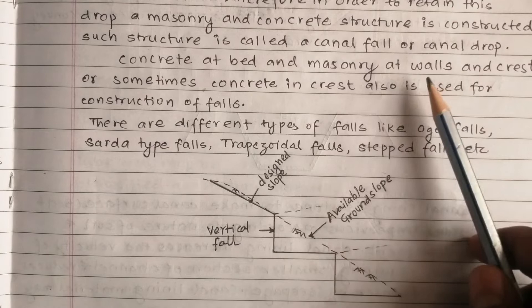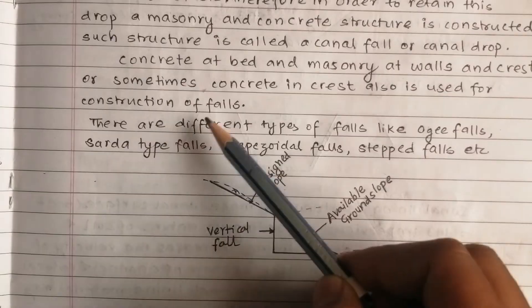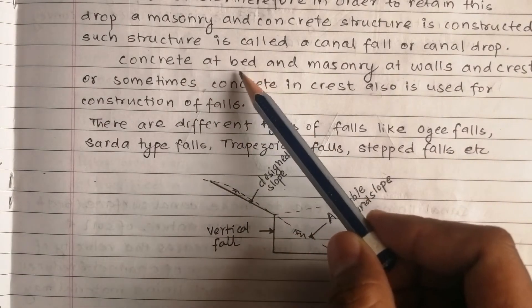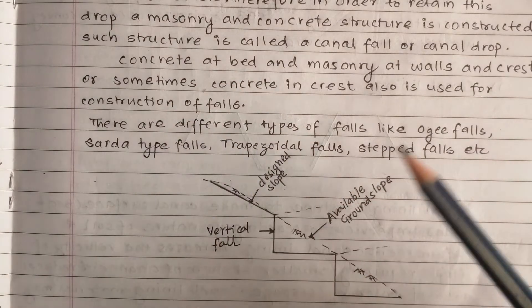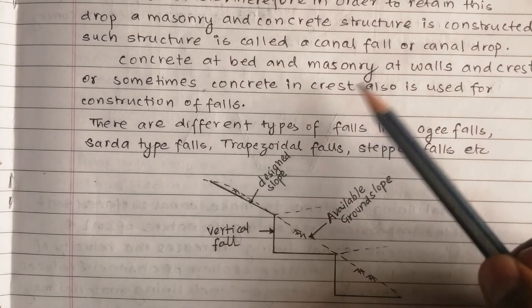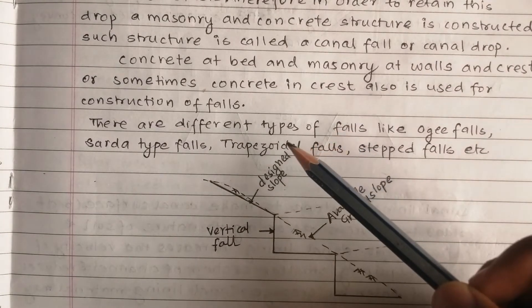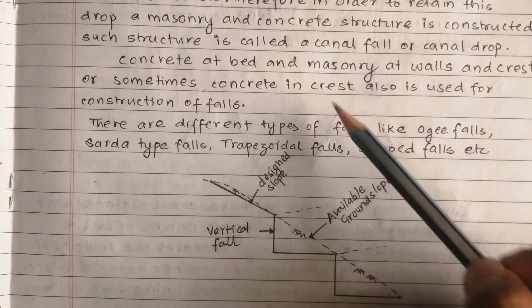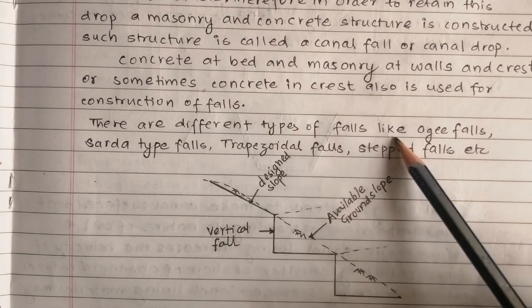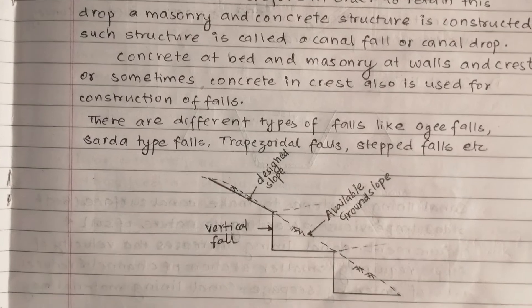Concrete at the bed and masonry at walls and crest, or sometimes concrete at the crest also, is used for construction of falls. There are different types of falls: aogi falls, sadha type falls, trapezial falls, and stepped falls.